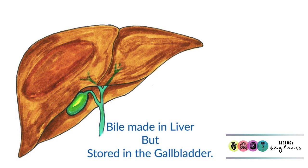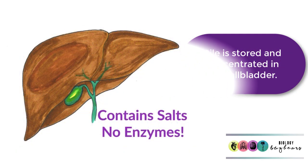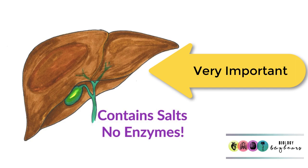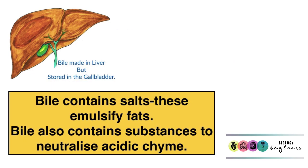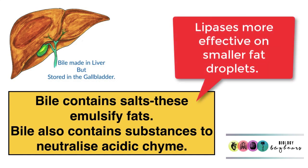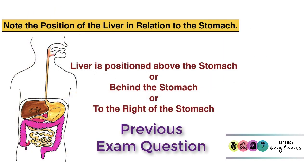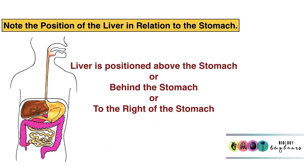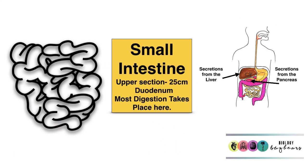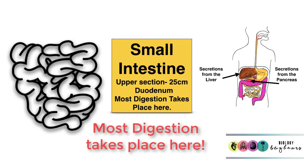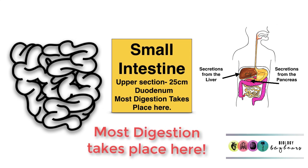The liver is another important gland — it produces bile, which is sent to the gallbladder where it is stored and concentrated. Bile does not contain any enzymes; it contains salts, and its purpose is to emulsify fats, turning large fat droplets into many smaller droplets, which is important for enzymatic breakdown of fats. The liver is positioned above, behind, or to the right of the stomach. When the acidic chyme leaves the stomach, it enters the small intestine, the upper section of which is the duodenum, where most digestion takes place.